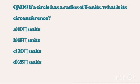Question number 9. If a circle has a radius of 5 units, what is its circumference? And the answer is 20 pi units.